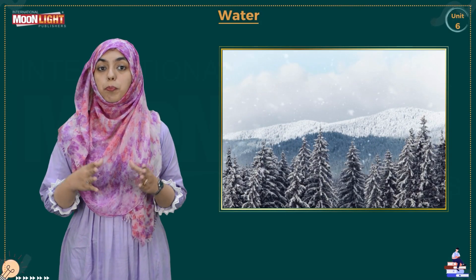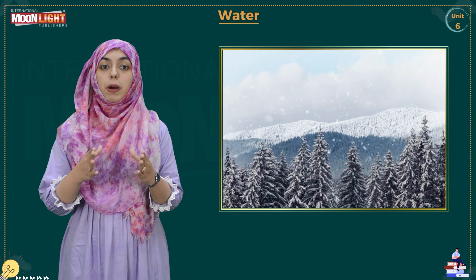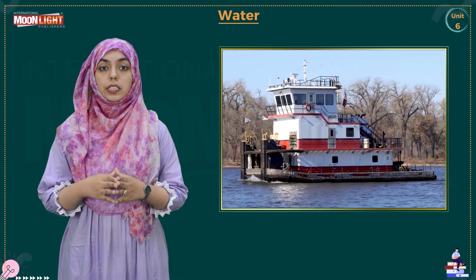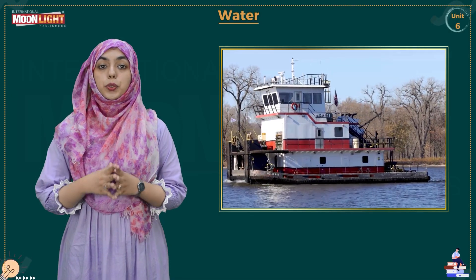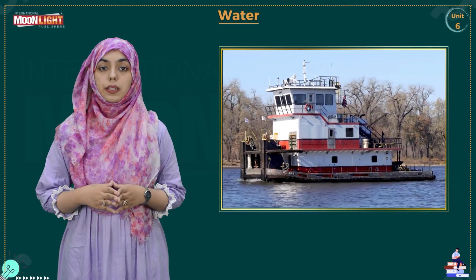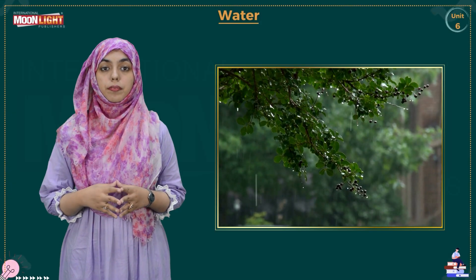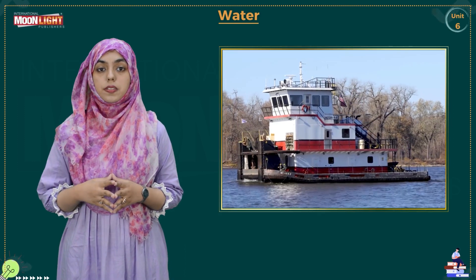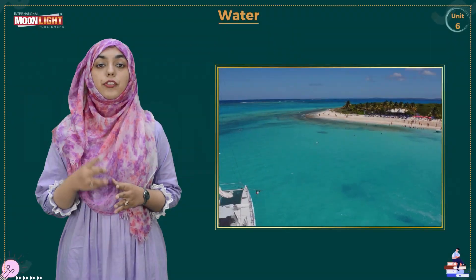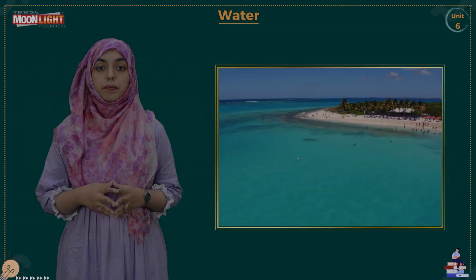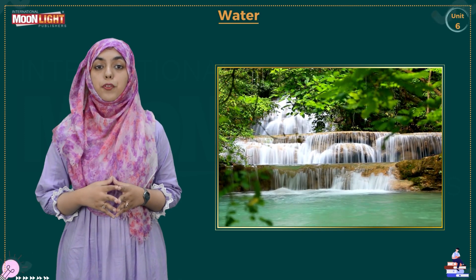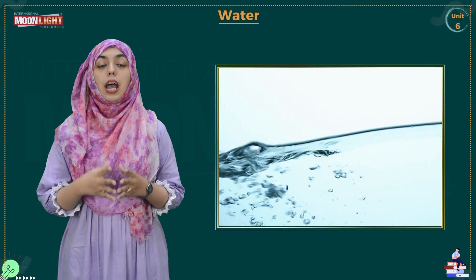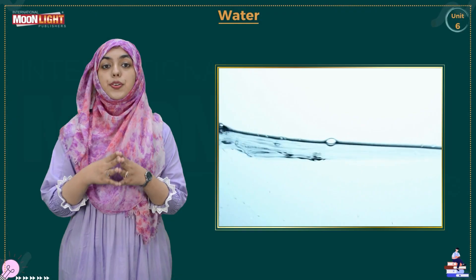Dear children, have you ever seen rain? In the desert there is very little water. Glaciers are found in the mountains and glacier water also flows through rocks. Now I will show you some natural sources of water. Number 1 is rain, and rain is the largest source of water. Number 2 is river. Number 3 is sea. Number 4 is waterfall. Number 5 is glacier. And number 6 is underground water.